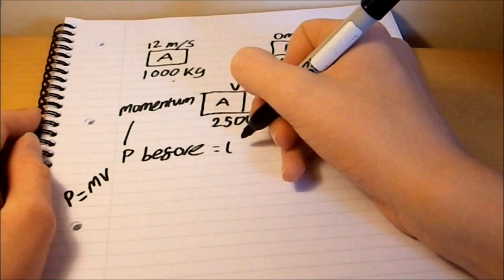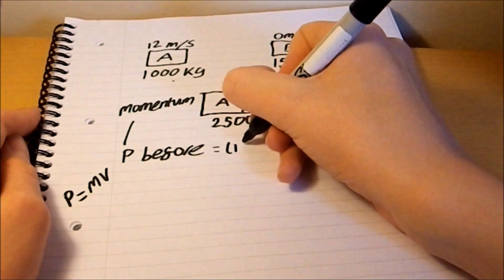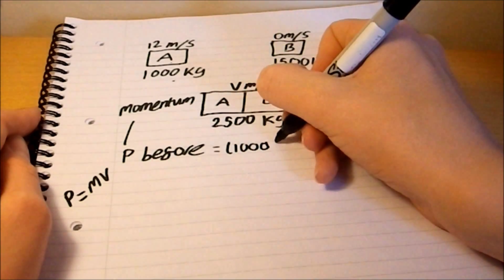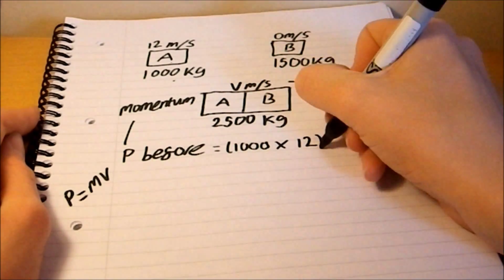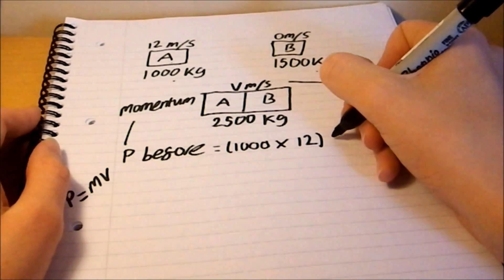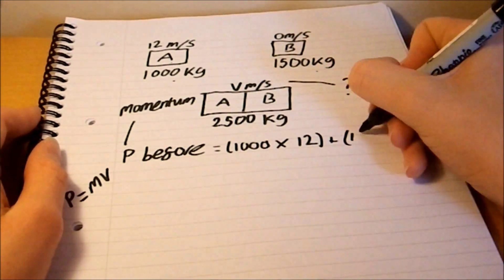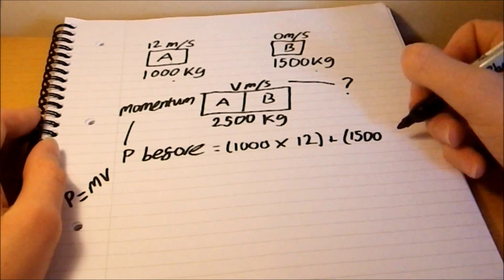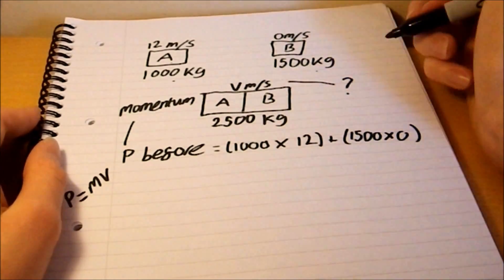So, we take the mass of car A and times that by the speed. And then add that to the mass of car B times the speed of car B.